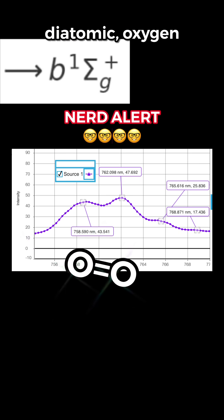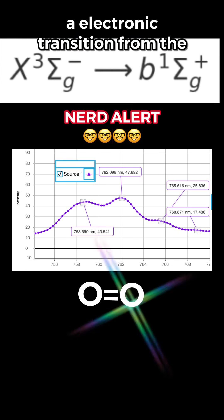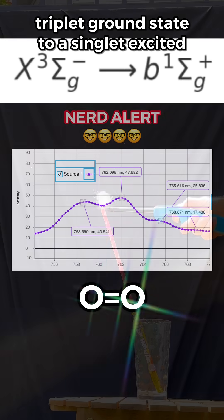For you physical chemists, that's the A-band of diatomic oxygen. An electronic transition from the triplet ground state to a singlet excited state.